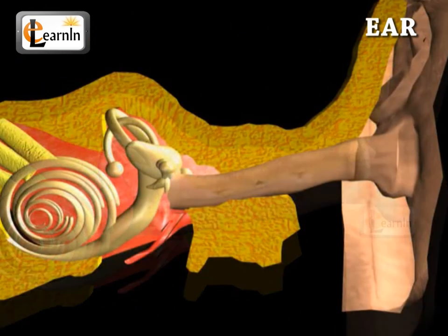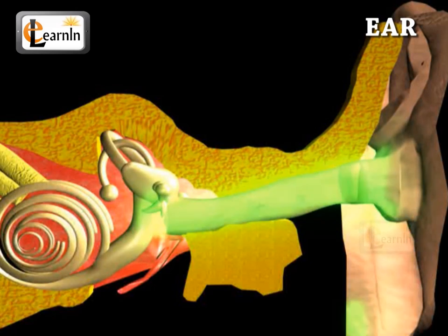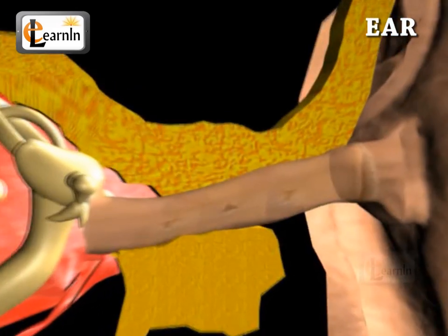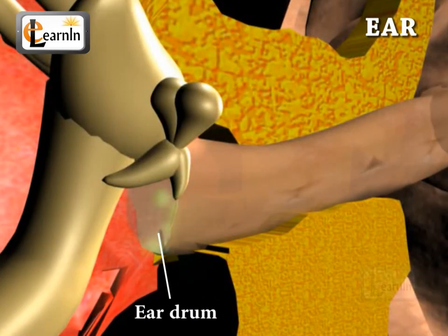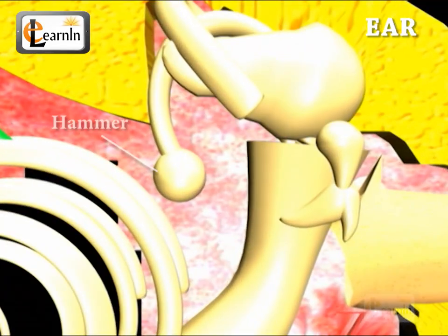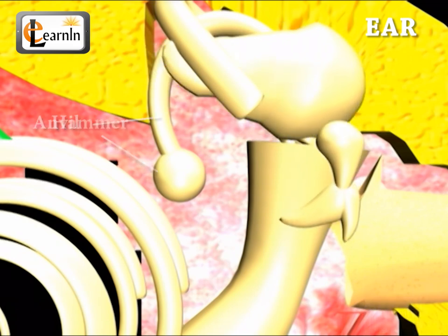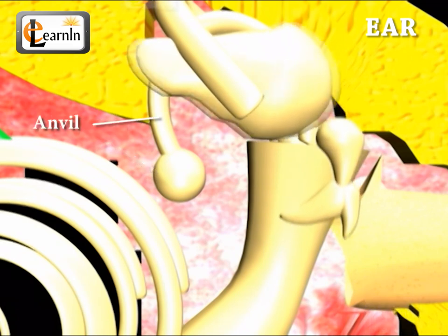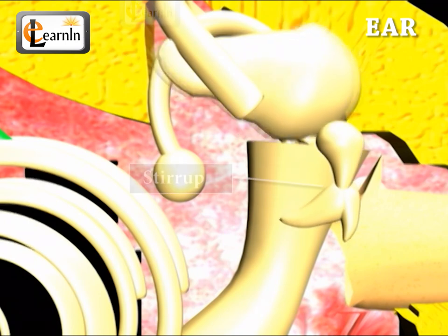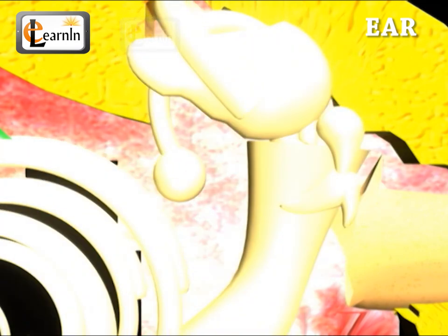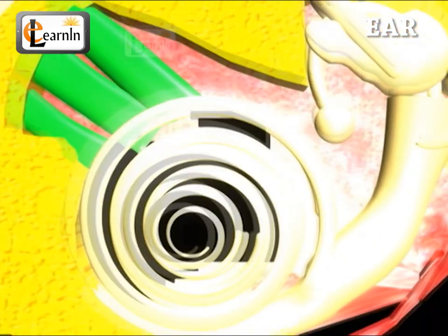The ear canal is a tube-like pipeline that connects the outside of the ear to the eardrum. The eardrum vibrates on receiving sound waves. The hammer, on receiving the vibrations from the eardrum, sends them to the anvil, which in turn passes them to the stirrup, and these are then passed to the inner ear.